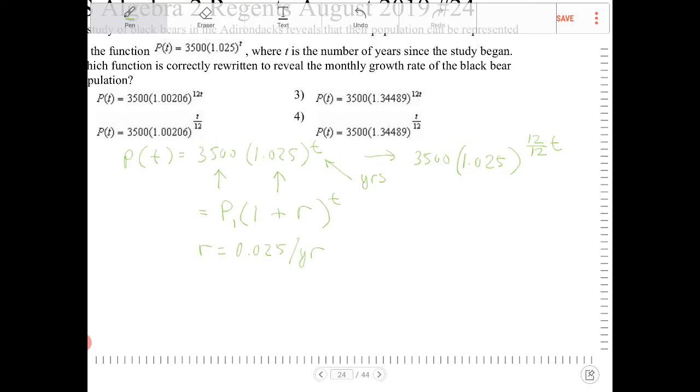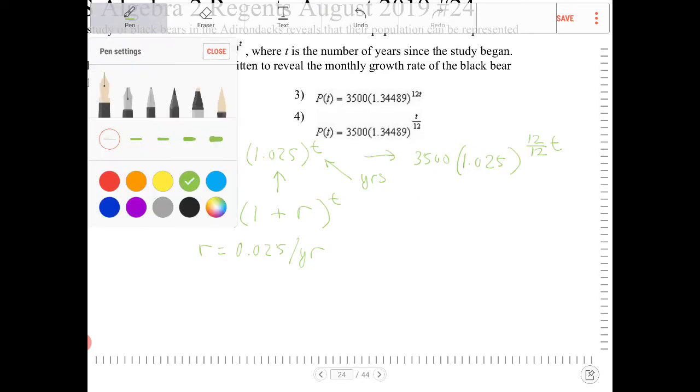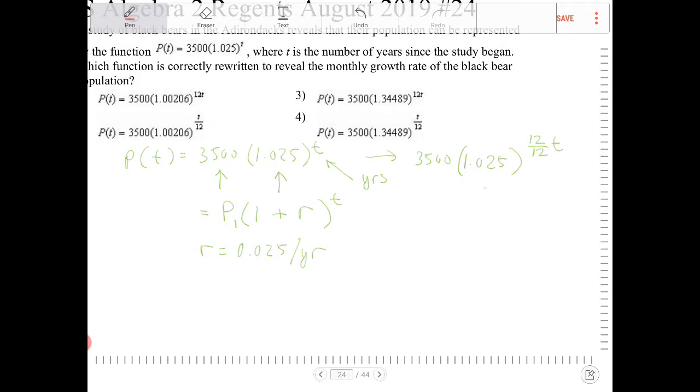By doing this, what I can do is I can apply the power rule. What will happen is this will become 3,500 times 1.025 to the 1/12th to the 12t, and what this does, because I'm raising 1.025 to the 1/12th, this will then give me the monthly rate.